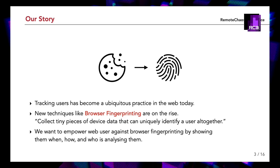Browser fingerprinting is very similar to cookies but works quite differently. Instead of receiving a unique identifier, for a device fingerprint we need to collect tiny pieces of device-specific data that can uniquely identify a user altogether. Similar to cookies, fingerprinting does not always mean identification or tracking — it is just a technical process of collecting a lot of device data. The lines between using this data for benign operations and tracking are very blurry, so in most cases we can only speculate on how this data is used.